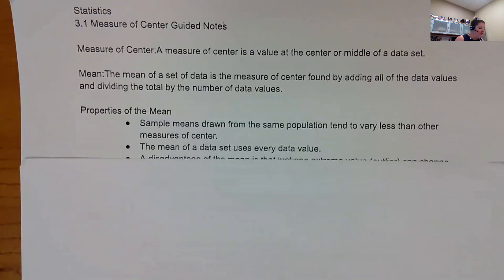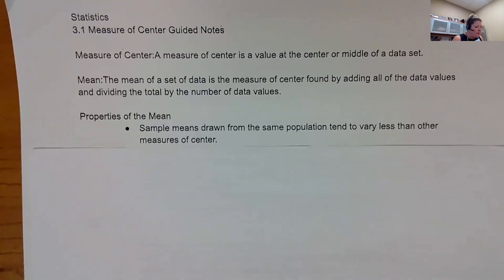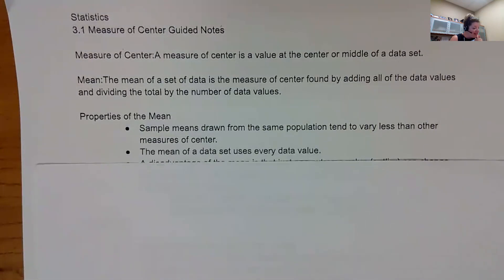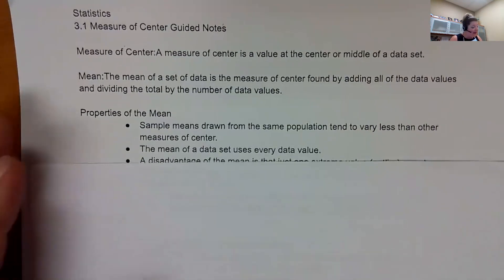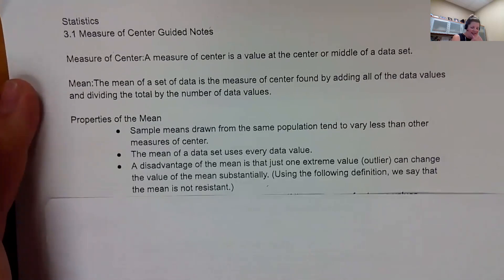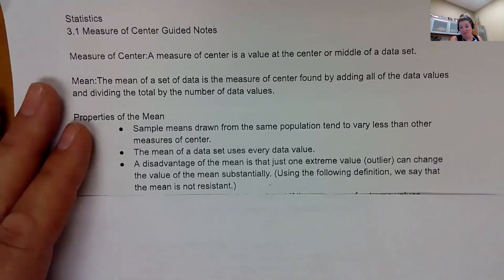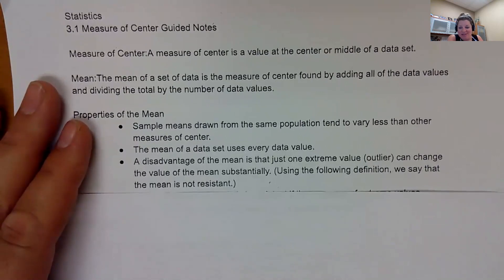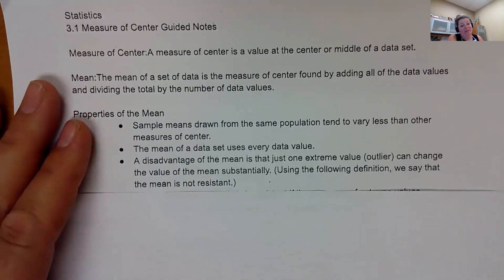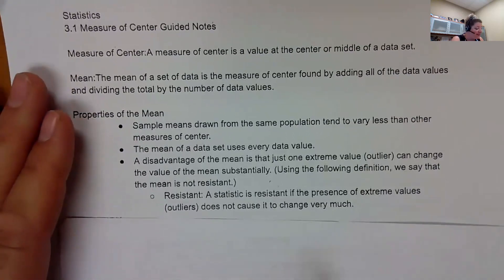So why do we use the mean? Sample means drawn from the same population tend to vary very little. If I have a couple samples, they all pretty much have the same mean. The mean uses every single data value. A disadvantage of the mean is if you have an extrema, an outlier, it can really change the value of your mean. So we have to have other methods because if I have an outlier, it's going to throw the mean off. And what they say is it's not resistant.